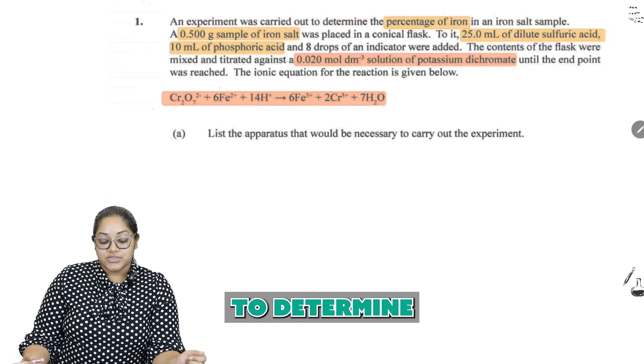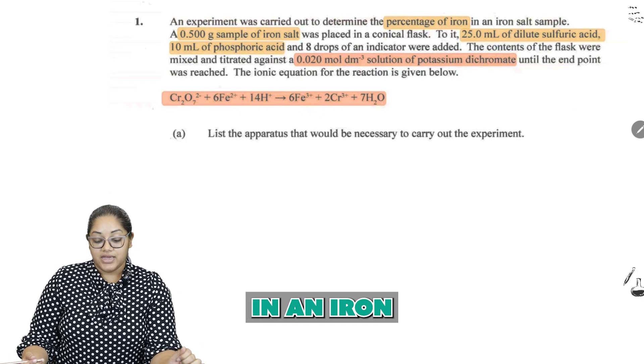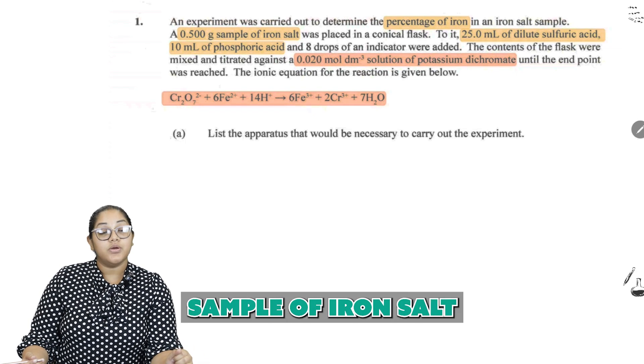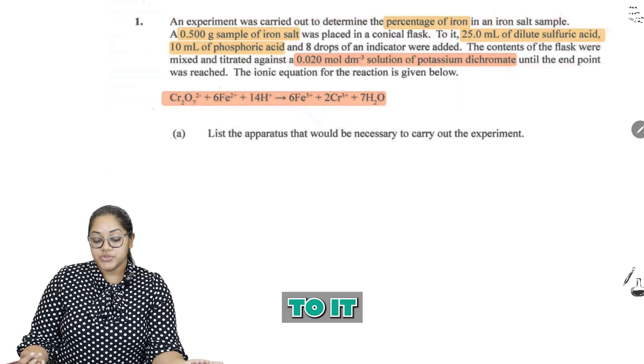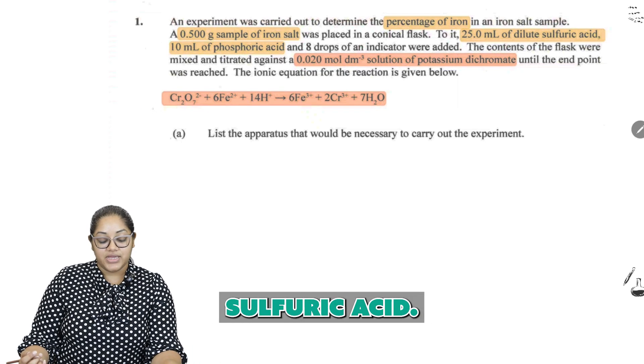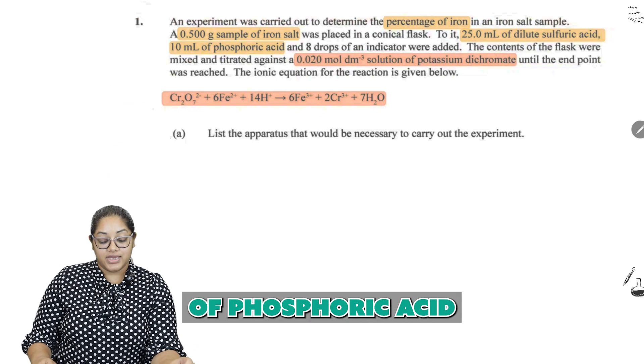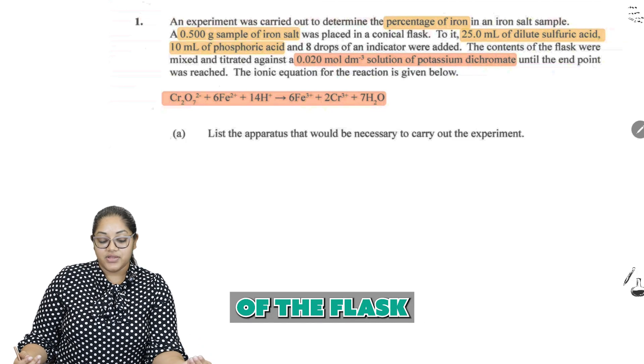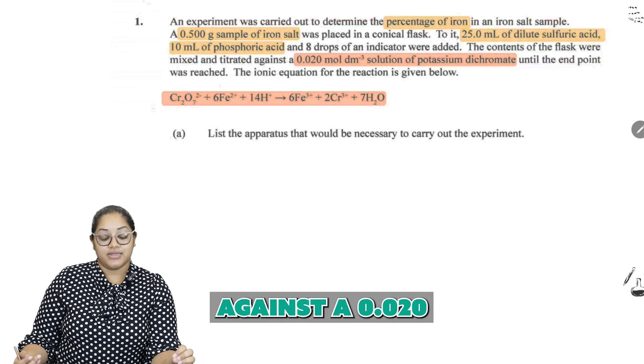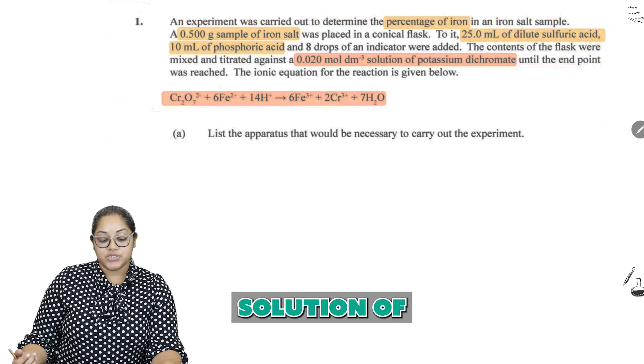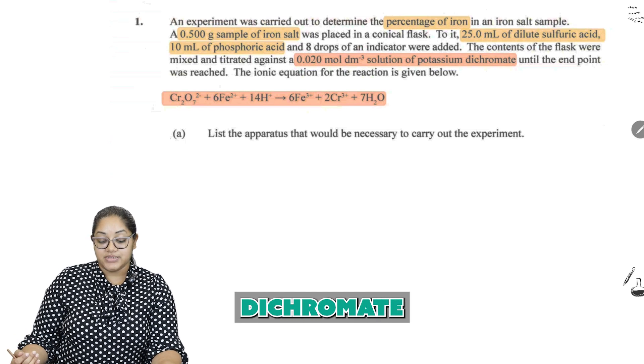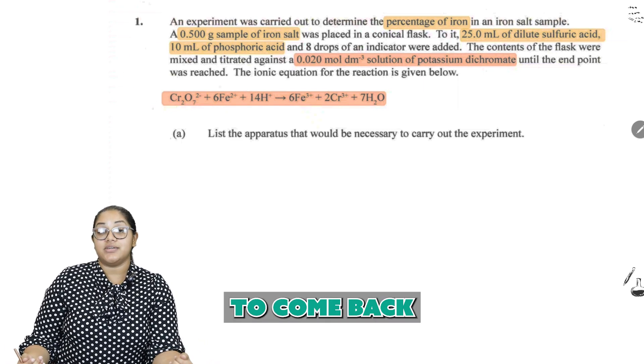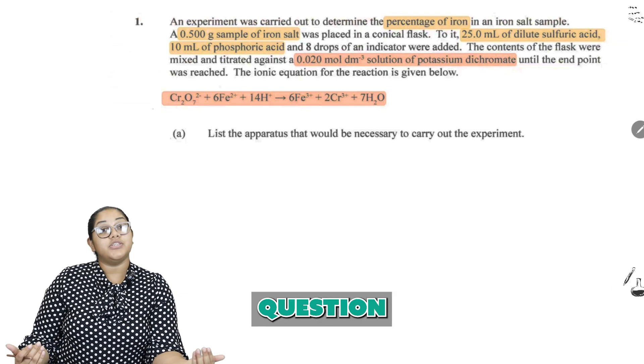So an experiment was carried out to determine the percentage of iron in an iron-salt sample. A 0.5 gram sample of iron-salt was placed in a conical flask. To it, 25 milliliters of dilute sulfuric acid, 10 milliliters of phosphoric acid, and 8 drops of an indicator were added. The contents of the flask were mixed and titrated against a 0.02 mole per dm³ solution of potassium dichromate until the endpoint was reached. We are also given an ionic equation, which we will need to come back to and use.